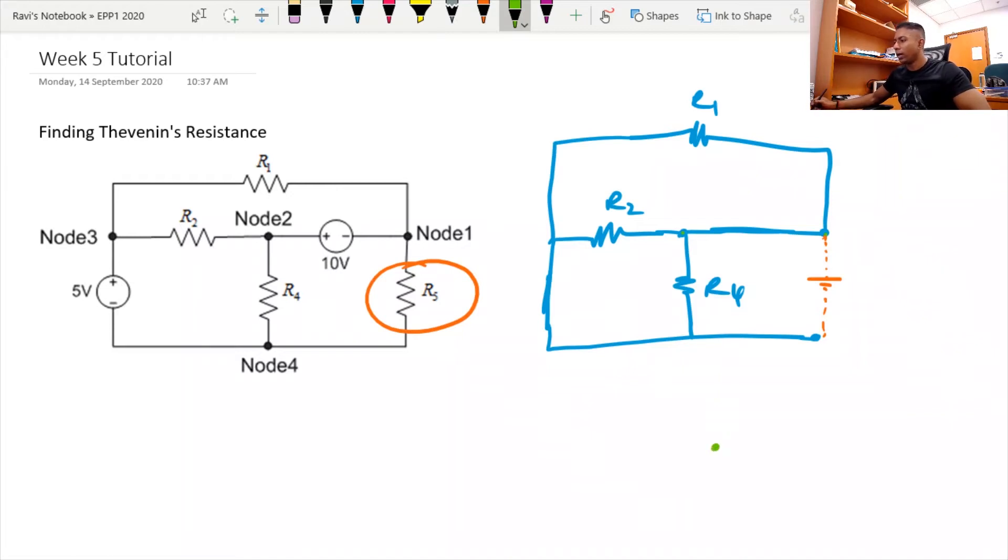one more way where I can make this line, I can bring it all the way to this point over here. All right, so I'm going to draw this point here, R4, and then R2, followed by R1.